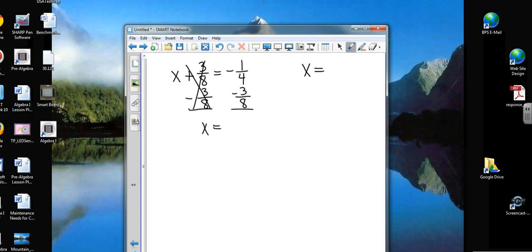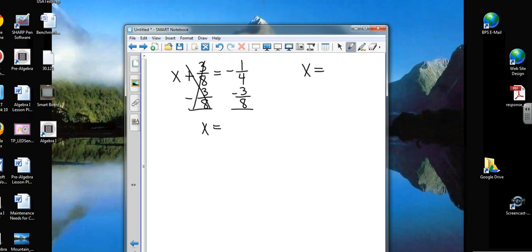Now, if I want to subtract these, if I'm subtracting fractions, what do I need? And the answer would be common denominators. The common denominator for 4 and 8 is going to be 8.